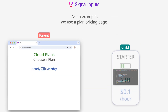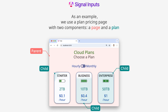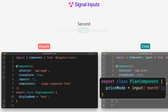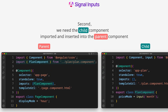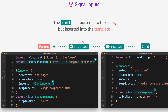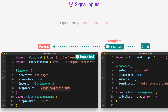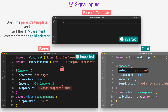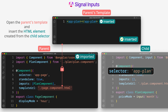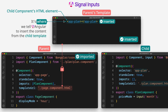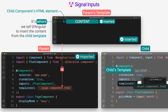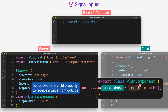As an example, we use a plan pricing page with two components: a page and a plan. We need the child component imported and inserted into the parent component. The child is imported into the class but inserted into the template. Open the parent's template and insert the HTML element created from the child selector. This is the child component's HTML element — it's where we tell Angular to insert the content from the child template. We allow the child property to receive a value from outside.